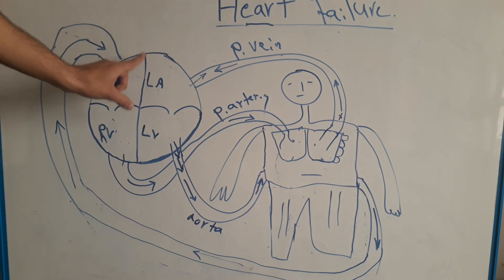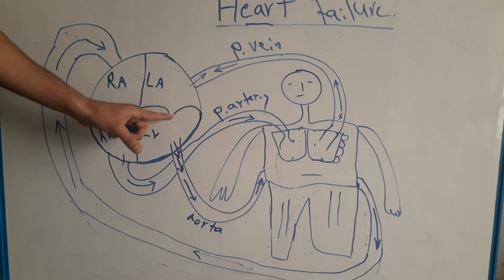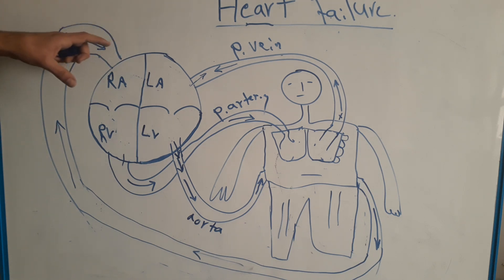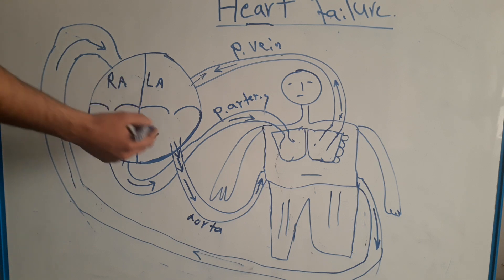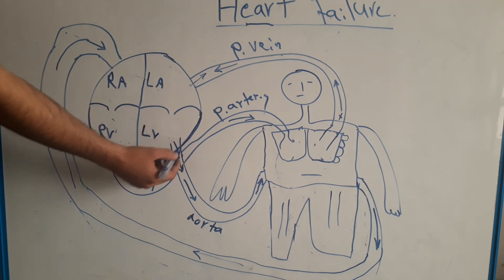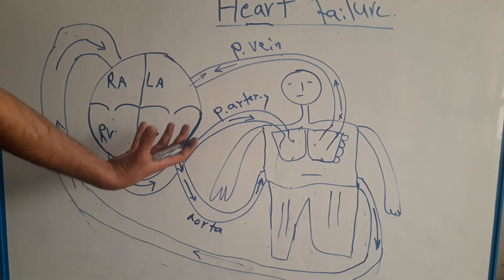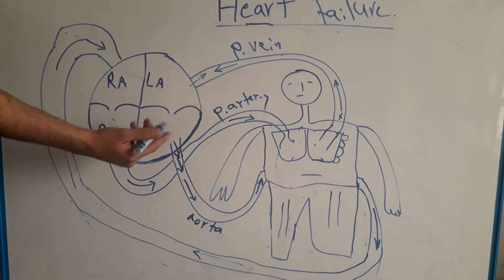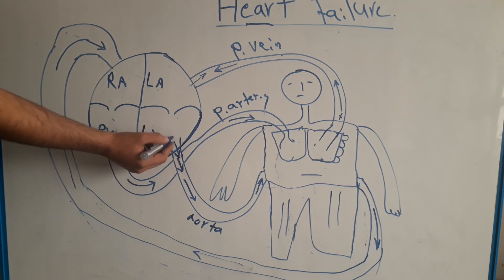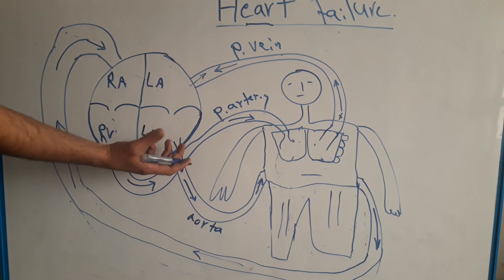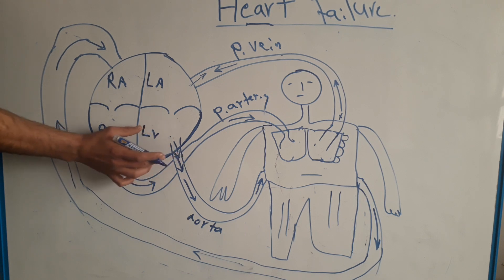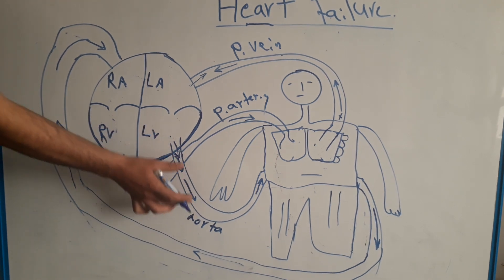Now we explain what happens in left heart failure. When the left ventricle cannot pump enough blood to the circulation, there are many types and causes of heart failure, but the most common cause is ischemia. When ischemia occurs in the muscle of the left ventricle, the left ventricle loses the power of contractility — it cannot pump enough blood to the circulation through the aorta.